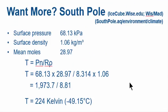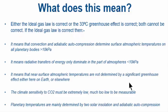Okay, let's keep going. What does all this mean? Either the ideal gas law is correct, or the 33°C greenhouse effect is correct. Both cannot be correct. If the ideal gas law is correct, well, my money's on it.